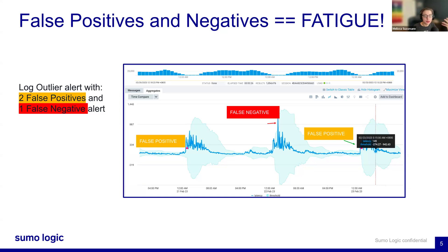One drawback is false positives, where the threshold is set too low and normal fluctuations trigger alerts unnecessarily, leading to alert fatigue. The other situation is false negatives, where the threshold is set too high and critical issues are missed, causing potential downtime or confusion for your SRE, SOC team, or security analysts. For example, if your application's typical latency is two seconds, setting a threshold at one second results in constant alerts. Setting it at five seconds, you might miss critical performance issues. Static thresholds are simply not adaptable to changes in your application's behavior.